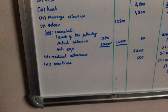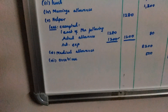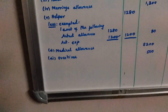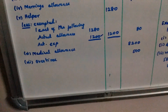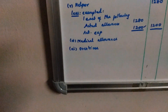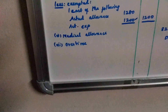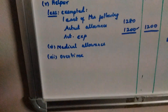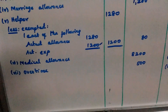Next, partially taxable allowances include: Helper Allowance, Laundering Allowance, Transfer Allowance, Traveling Allowance, Conveyance Allowance, Daily Allowance, Uniform Allowance, and Academic Allowance. For Helper Allowance, the actual expense is $1,200.